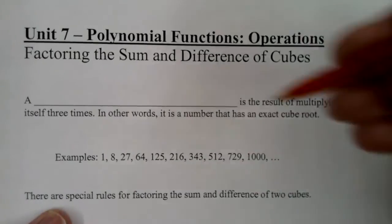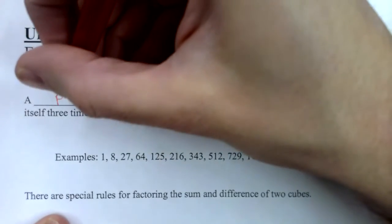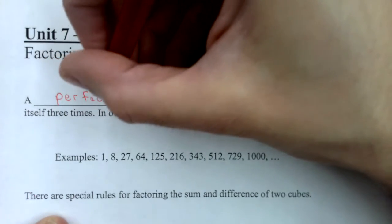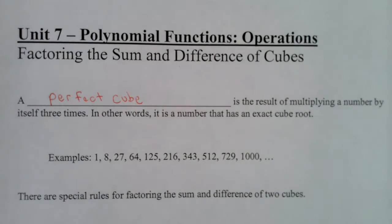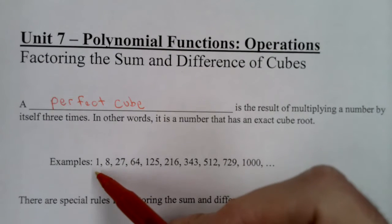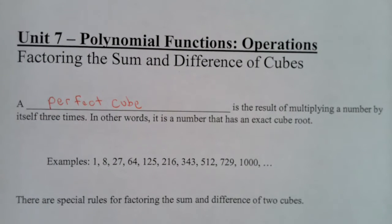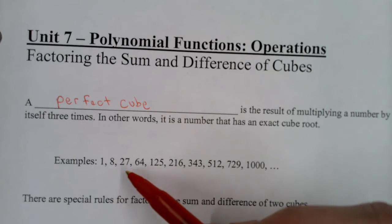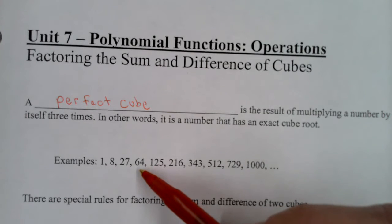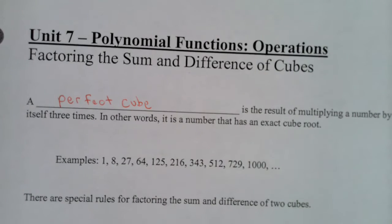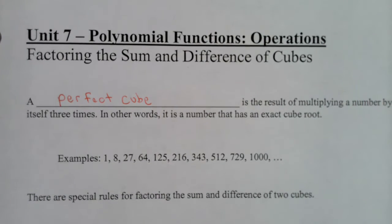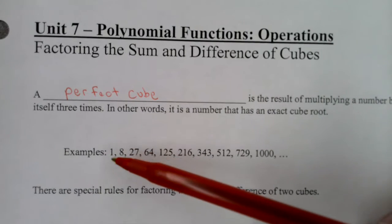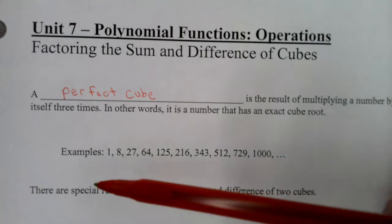One definition to start: a perfect cube is the result of multiplying a number by itself three times — in other words, it is a number that has an exact cube root. For example, 1 is a perfect cube because it equals 1×1×1. Eight is a perfect cube because it equals 2×2×2. Twenty-seven is 3×3×3. Sixty-four is 4×4×4. Five times five times five is 125, and so on. I listed them up to a thousand. The more you memorize, the easier it will be for you — try to memorize these.